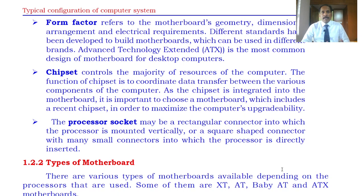In the block diagram of computers, we discussed the input, and then the central processing unit — which consists of a control unit, arithmetic logical unit, and registers — and then we talked about the memory unit. There are two types: primary memory and secondary memory, and also the output units, of which there are different types depending on requirements.